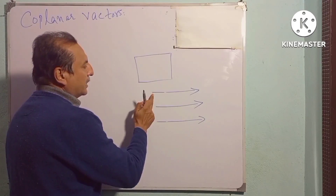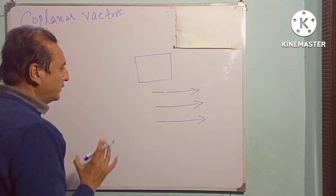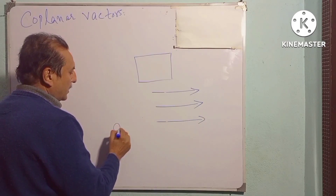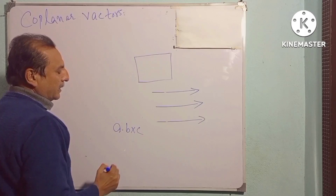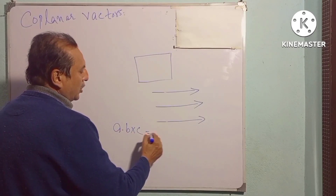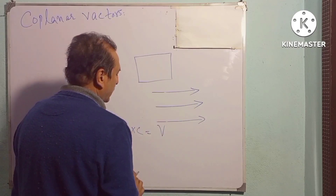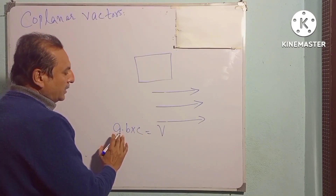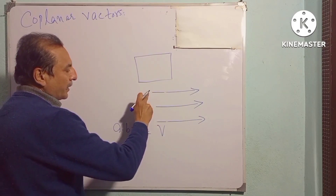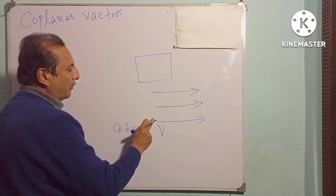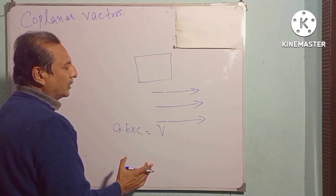Coplanar vectors کس طریقے سے ہم find کریں گے کہ یہ تینوں vectors coplanar ہیں — ہم نے یہ پڑھا ہے کہ اگر three vectors کا triple product نکالا جائے تو وہ volume of a parallelepiped ہوتا ہے۔ اگر یہ تینوں vectors coplanar ہیں، ایک plane میں ہیں، تو پھر اس کا volume نہیں ہوگا۔